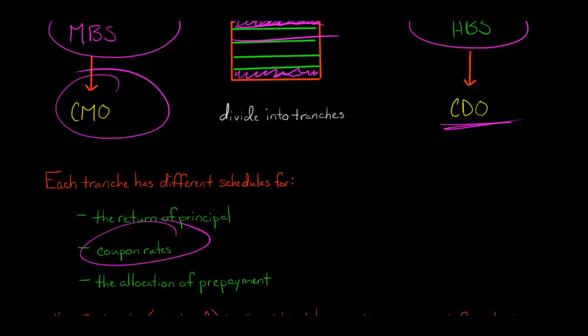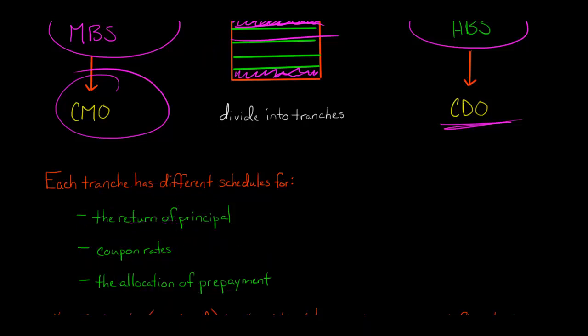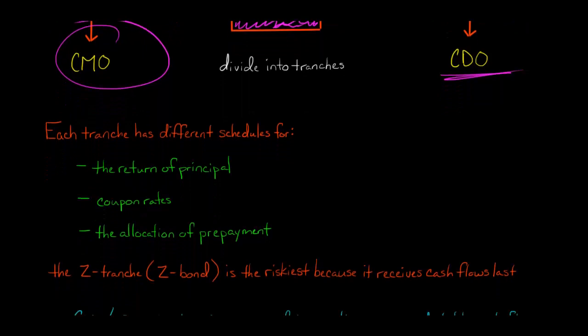There could be different coupon rates for the different tranches. And then there's also the question of prepayment allocation. Prepayment is an issue — when we talk about prepayment risk, if interest rates go down, people are going to refinance their mortgages and pay off their mortgage early. So how do we allocate prepayment of the mortgages? There are going to be different schedules for all this based on that particular CMO or CDO.